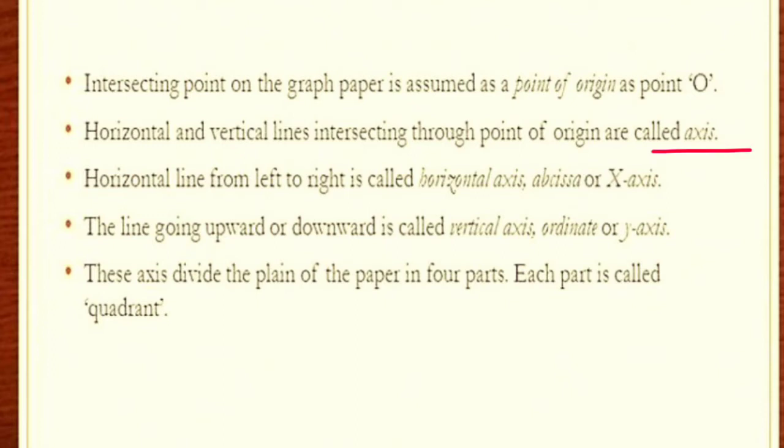Horizontal and vertical lines intersecting through point of origin are called axes. X-axis and horizontal line, as I told you abscissa, and vertical axis is y-axis.